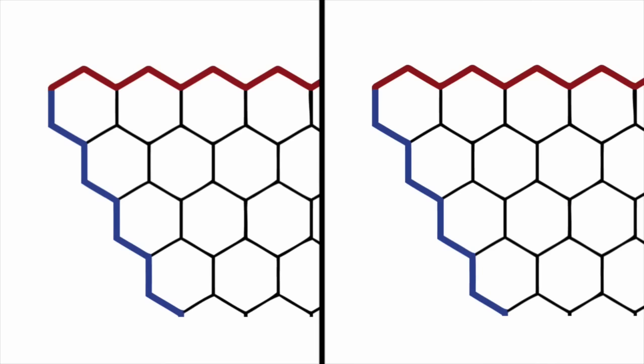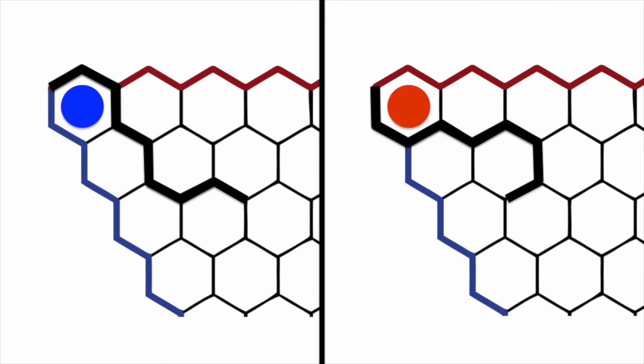Notice also that each corner hexagon must have a highlighted edge. No matter whether the corner hexagon is colored blue or red, at least one of its edges will be highlighted. Since each junction touches either zero or two highlighted edges, these chains must grow and can't stop.